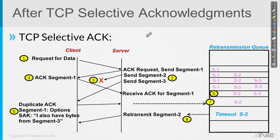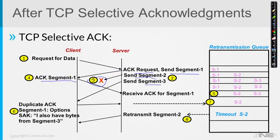Here's how it works — same scenario. In step one, the request for data goes out. In step two, same thing: we send segment one, which also acknowledges the request, then segment two and segment three. Segment two gets lost. In step four he creates an ACK for segment one — nothing different. In step five, we remove segment one from the retransmission queue. So far, everything is identical to the previous scenario. But here is where things get different.